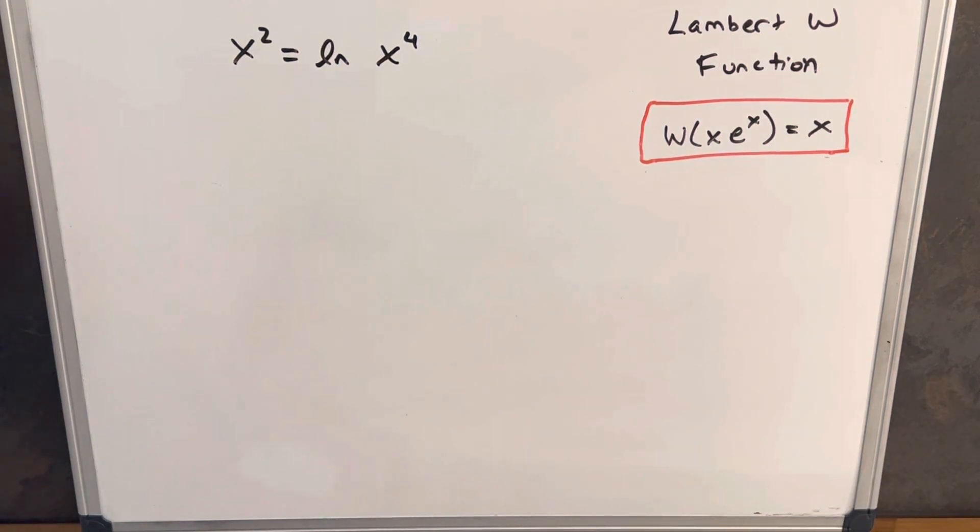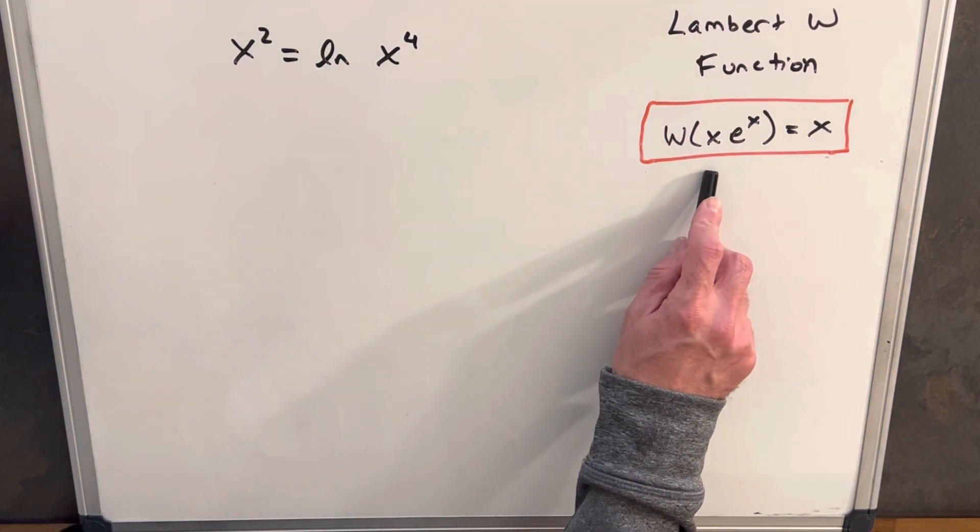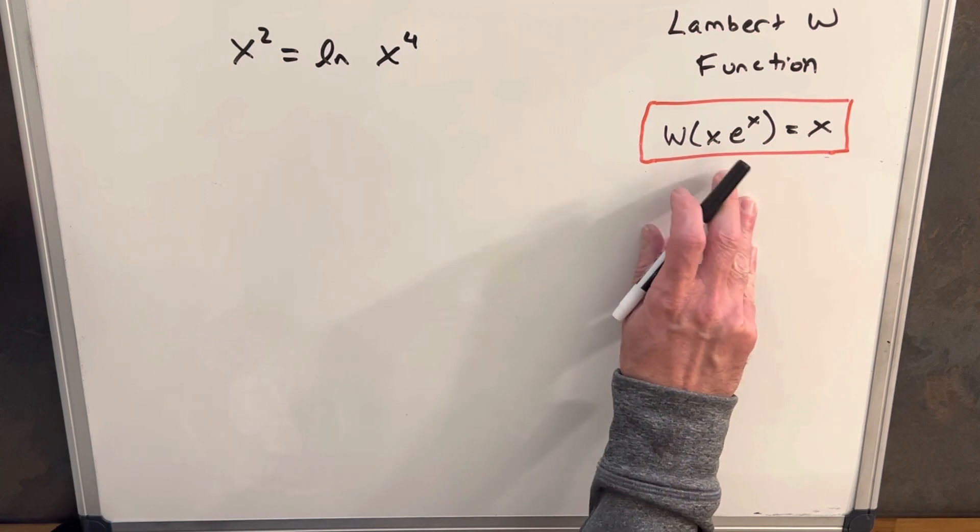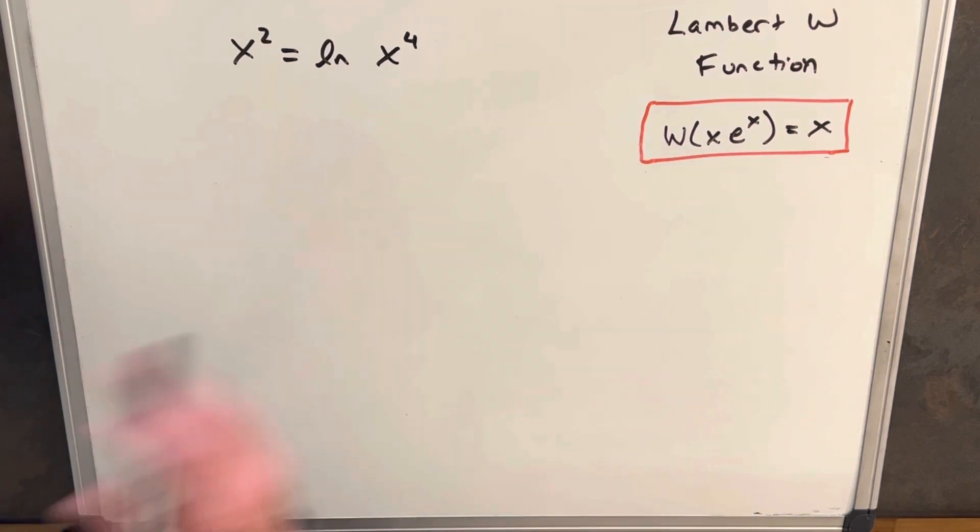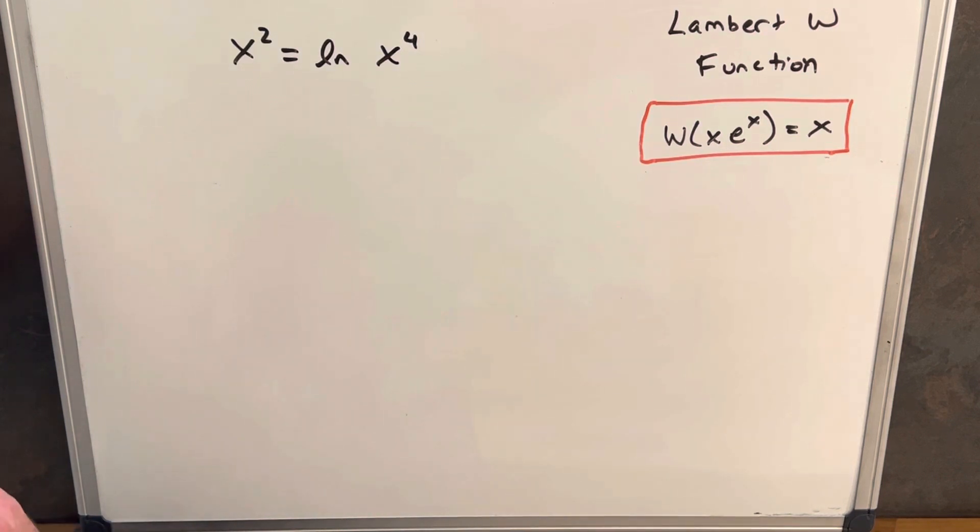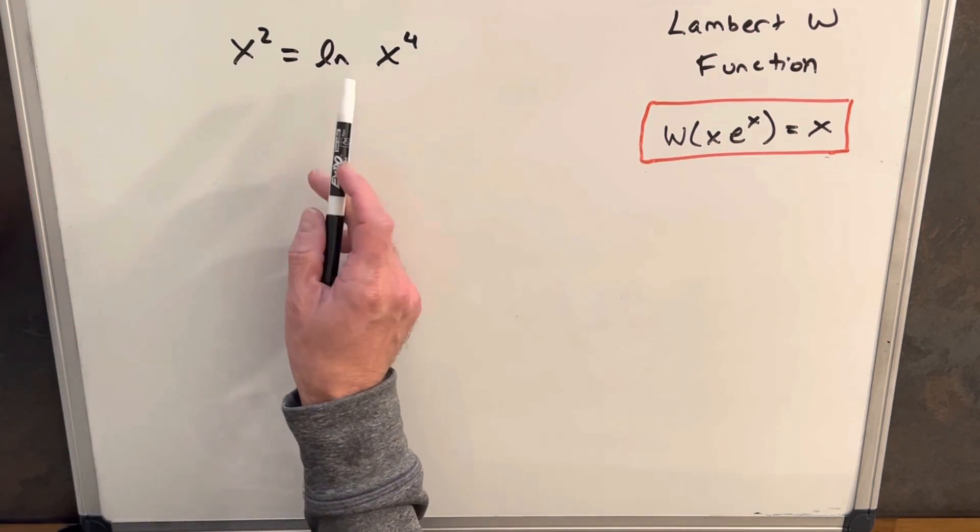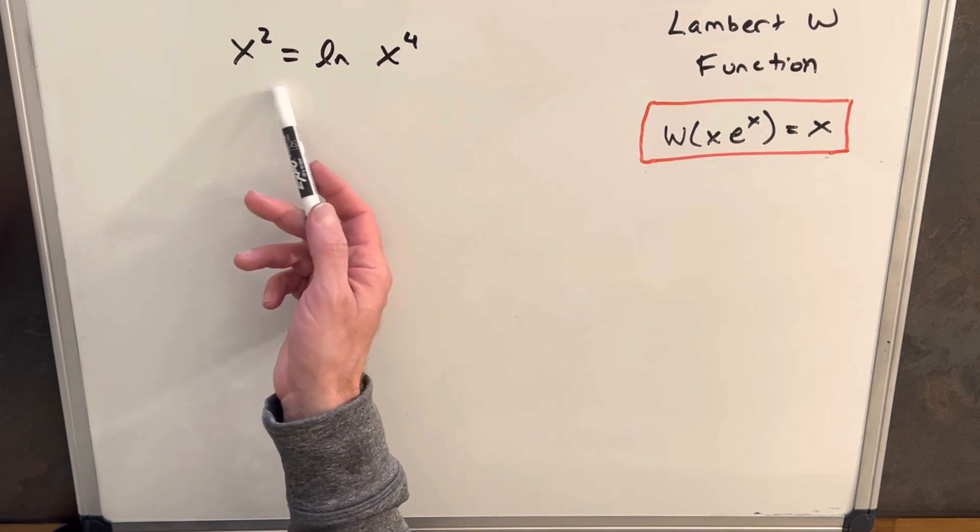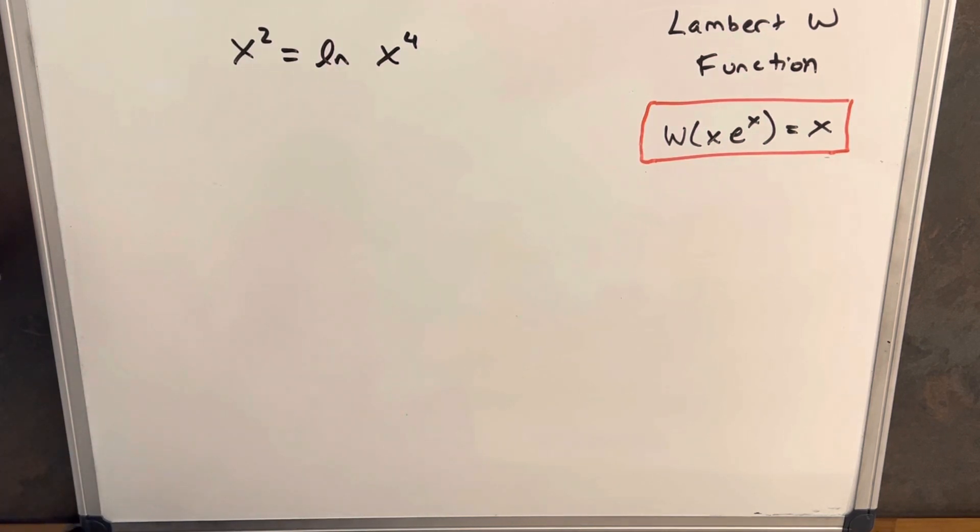So to start with, we want to use this function over here, this formula, Lambert W of x times e to the x equals x, because this is really our way in these exponential problems to simplify the problem. And the first problem I see here is we don't have an e in the problem, so we're going to need to kind of create that.